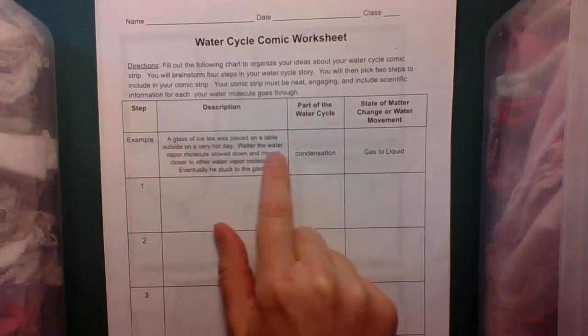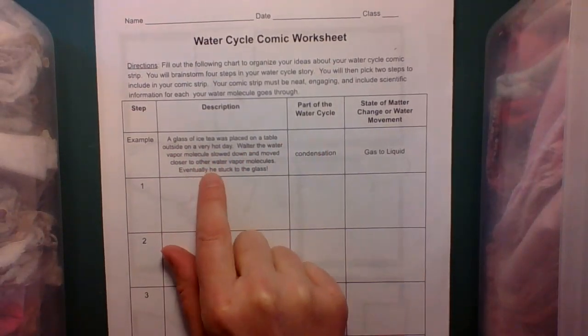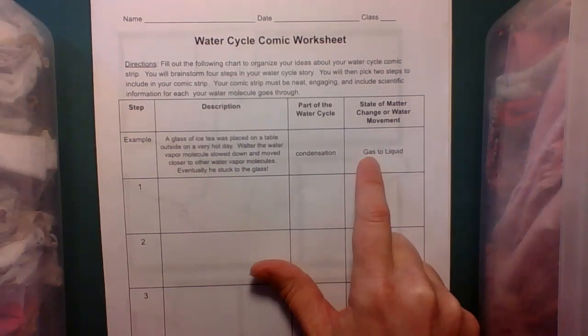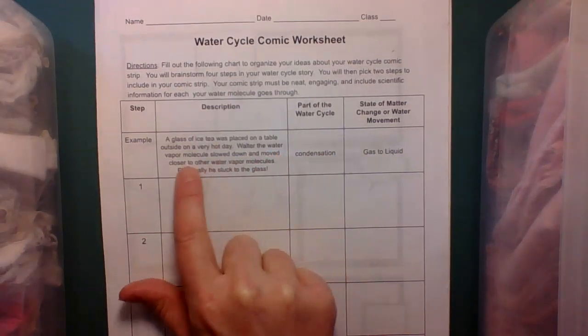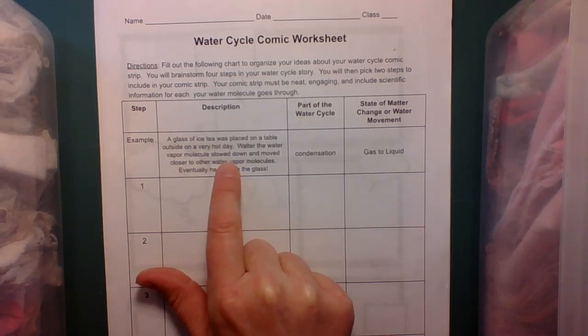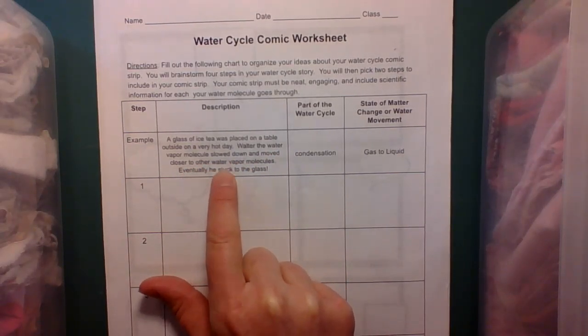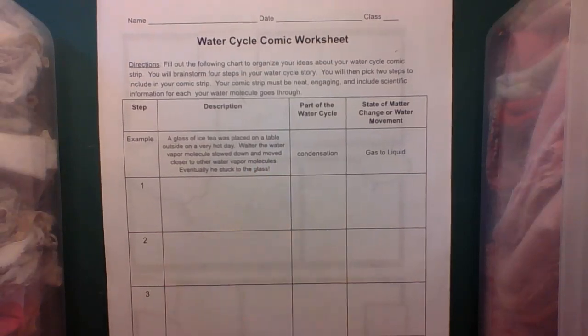So I gave you one example of a phase change. So part of the water cycle, condensation, gas to liquid. So my character, Walter, the water vapor molecule, the molecule slowed down, moved closer together to other water molecules, so it condensed on the outside of the glass.